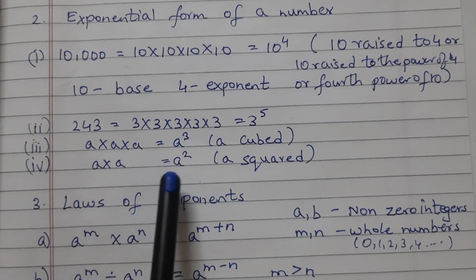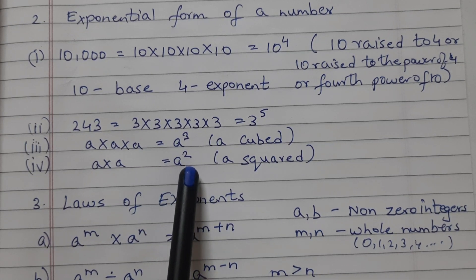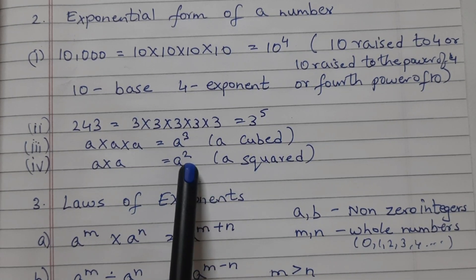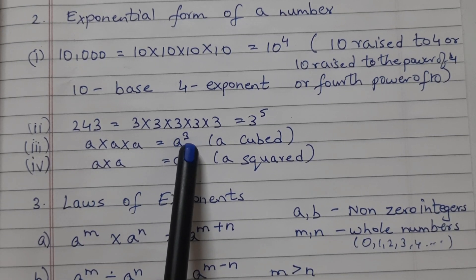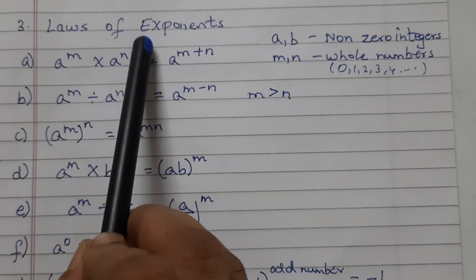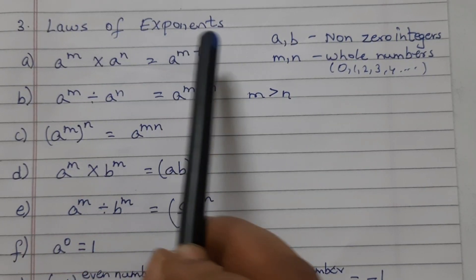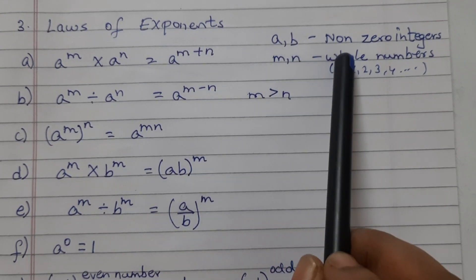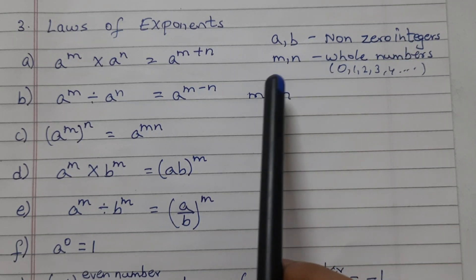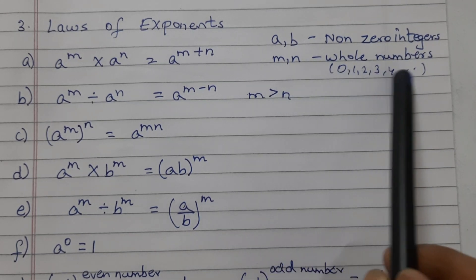a into a is a raised to the power of 2, or a squared. So 2 as the exponent is read as squared; if 3 is the exponent, we can read it as cubed. There are certain laws of exponents that we need to know. Here a and b are non-zero integers — that means all integers except 0 — and m and n are whole numbers.